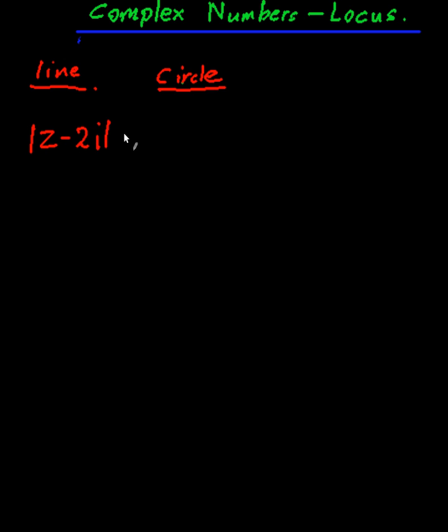|z - 2i| = |z + 3i|. Now this is the usual notation of what a straight line looks like in complex numbers. So let me draw this out for you.